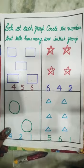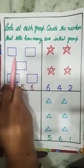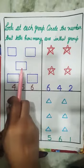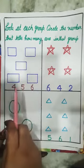Firstly we count squares. How many squares? One, two, three, four, five. How many squares are there? Five.